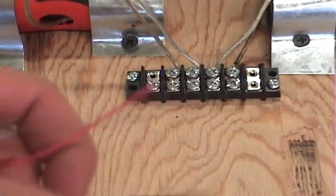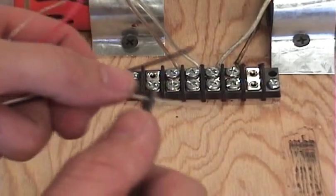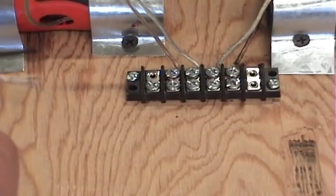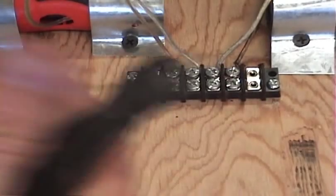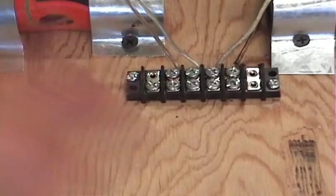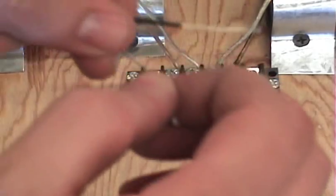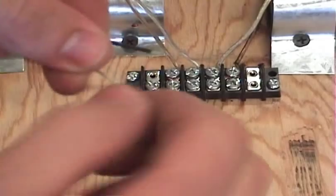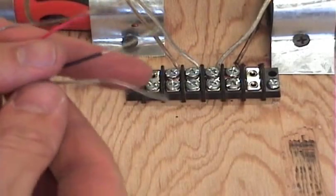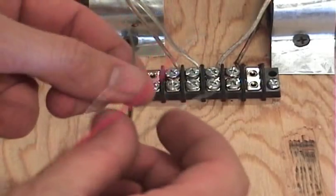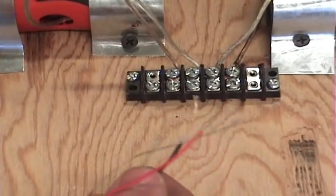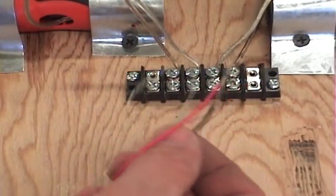All I have to do now is strip these, bring it down about an inch, twist it, and then I'll put the two colors that go to the left motor on one side, and the other ones on the other side.